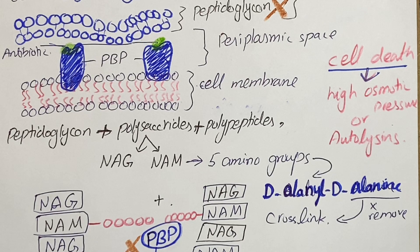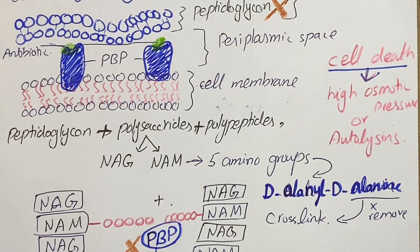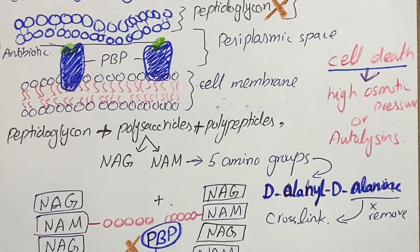Beta-lactam antibiotics are bactericidal in action and are only effective against rapidly growing organisms that synthesize a peptidoglycan cell wall. Therefore they will not be effective against organisms which do not have a cell wall at all, like mycobacterium, viruses, fungi, and protozoa. All of these organisms lack a cell wall and therefore these antibiotics will not be effective against them.